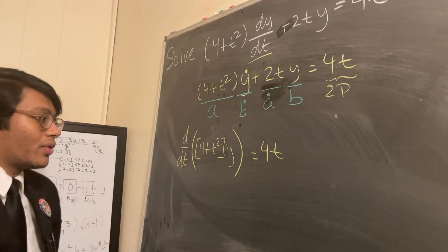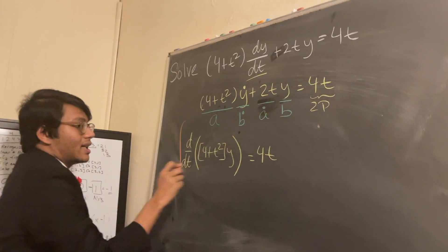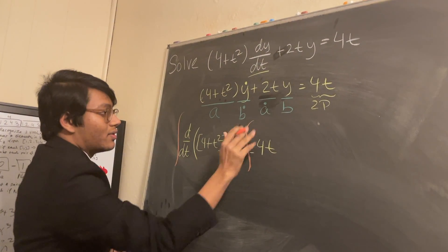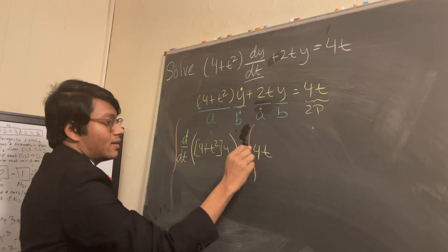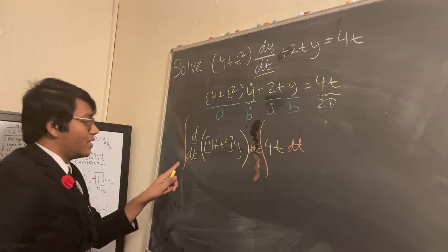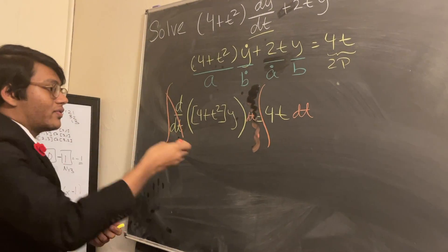And so our goal is to solve for y. And so all we have to do here is just integrate both sides with respect to t. So here, if I take the integral of a derivative, of course, they cancel out.